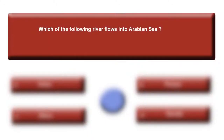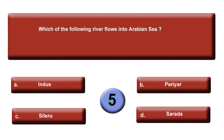Which of the following river flows into the Arabian Sea? Your options are: option A, Indus; option B, Periyar; option C, Sileru; or option D, Sarada. Five seconds were given and five seconds is up. Your right answer is B, Periyar.